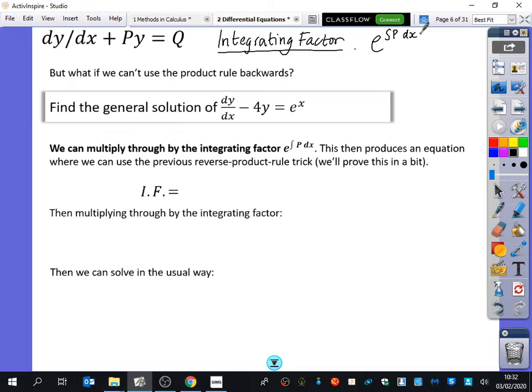So we can multiply through by the integrating factor, e to the integral of p dx. This then produces an equation where we can use the previous reverse product rule trick, and we'll prove it in the next slide. So the standard form that you should have is dy/dx plus py equals q where p and q are x functions. You may see it written in some books that it would be dy/dx plus p(x)y equals q(x). I just prefer this notation because it's a little bit simpler.